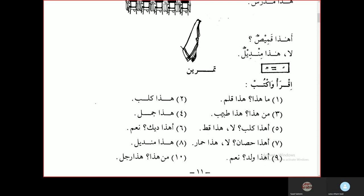Exercise — Ikhra' waktub, Read and write. Ma hadha? Hadha kalbun — this is a dog. Man hadha? Hadha tabibun — this is a doctor. Hadha jamalun — this is a camel. Ahadha kalbun? — Is this a dog? La, hadha kittun — No, this is a cat. Ahadha deekun? — Is this a rooster? Ahadha hisaanun? — Is this a horse? La, hadha himarun — No, this is a donkey. Hadha mindilun — this is a handkerchief. Ahadha waladun? Na'am — Yes. Man hadha? Hadha rajulun — this is a man.